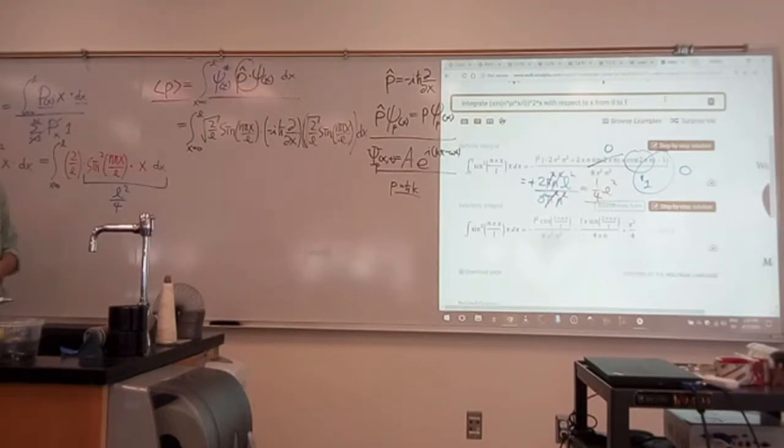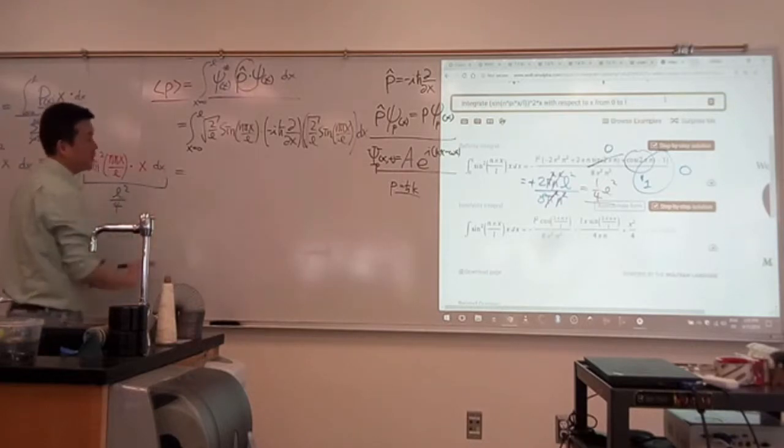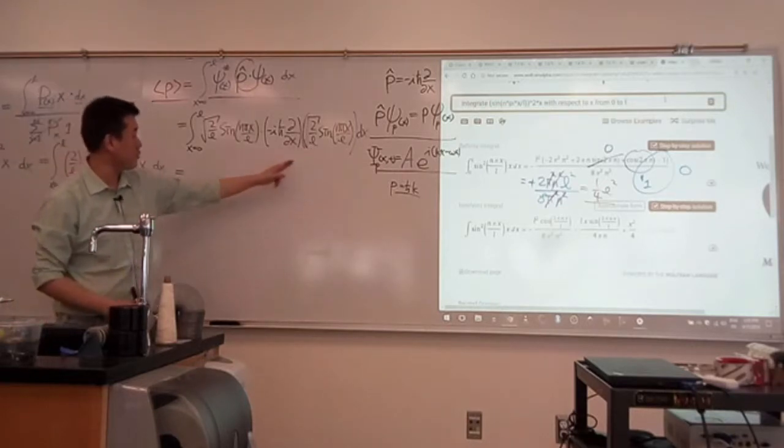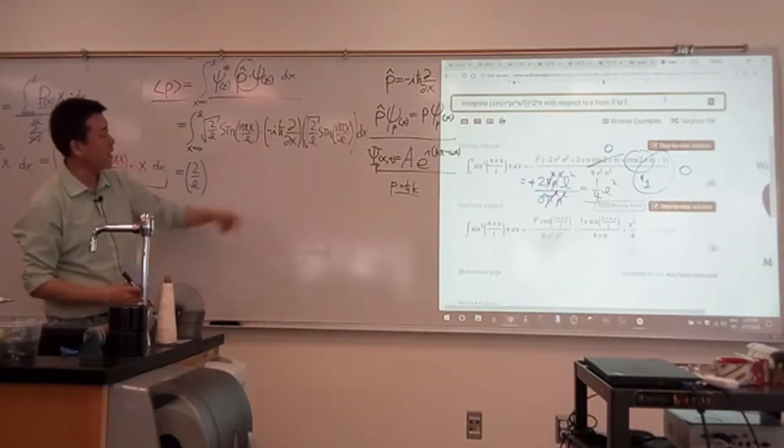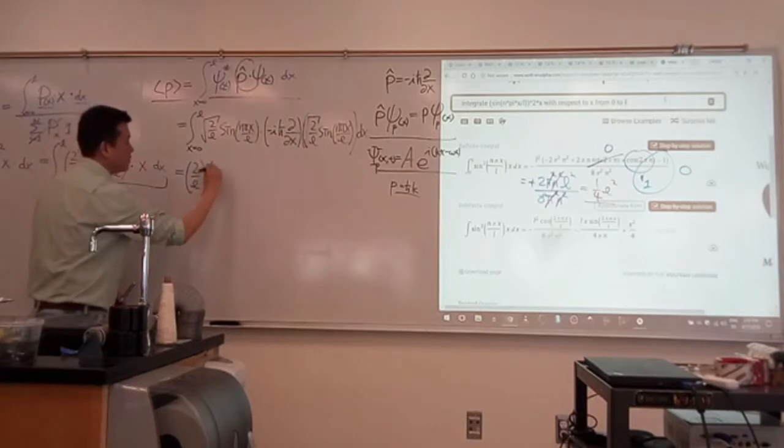All right, let me pull out all the constant coefficients in front so that they are not bothering me. I have square root of 2 over L, 2 over L, so 2 over L. I have minus i h bar. Let me rewrite it this way: h bar over i. I guess it looks simpler to me.